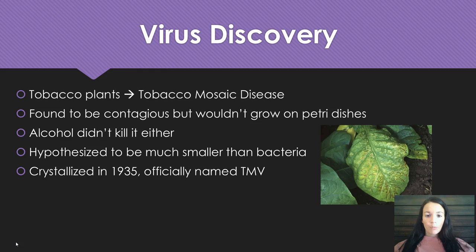A disease was found on tobacco plants called tobacco mosaic disease. Scientists were trying to figure out what it was and how they could stop it. They tested it like they would with bacteria — tried to grow it on petri dishes and tried alcohol to see if it would kill it — but neither worked. So they hypothesized it was much smaller than bacteria, and in 1935 it was crystallized and officially named tobacco mosaic virus after it was visible under an electron microscope.